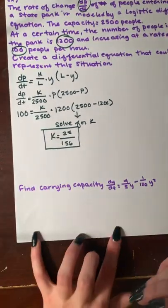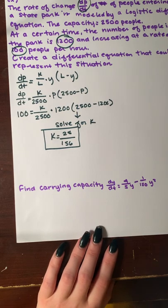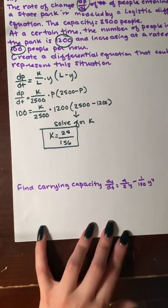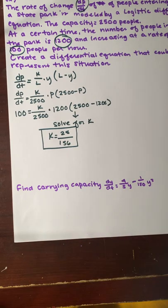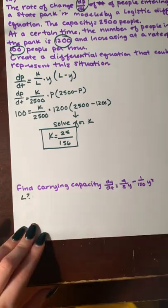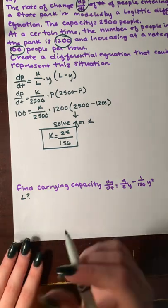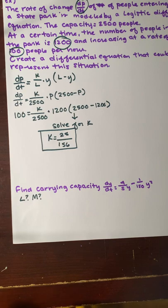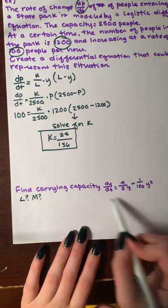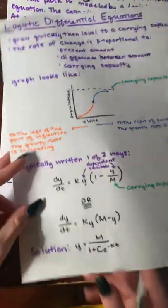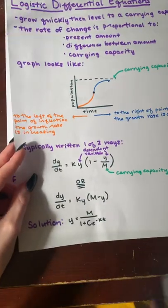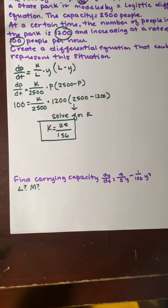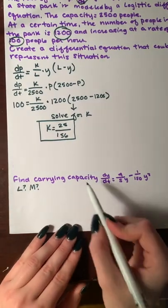Moving on to the second part of this example. It says, find a carrying capacity for dy over dt equals 4 fifths times y minus 1 over 150 y squared. So, what we're looking for here is we're looking for L, a carrying capacity. So, we want to switch this into one of these forms. We're going to switch it into this form right here.